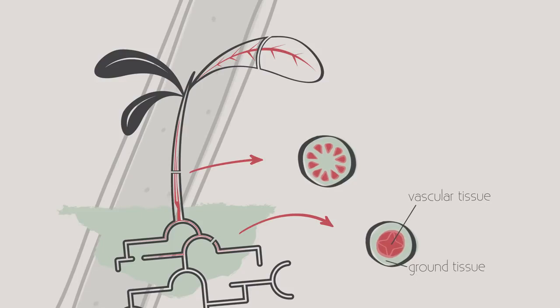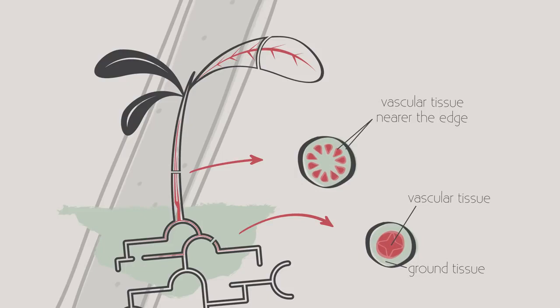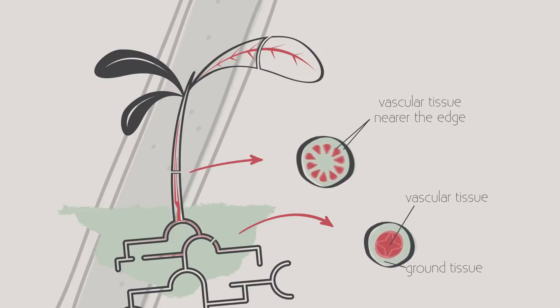Whereas the stem has to resist being squashed and bent, and so it has the vascular bundles nearer to the edge to give the stem strength and support.